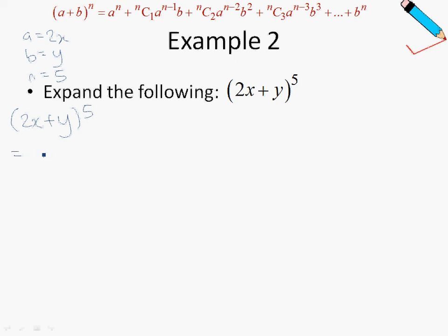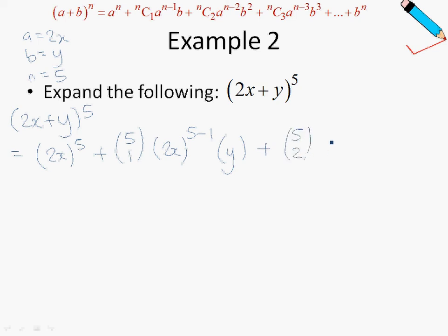The first term is a to the power of 5, which is 2x to the power of 5, followed by 5 choose 1, then 2x to the power of 5 minus 1 (so power of 4), and b is just y. Carrying on, 5 choose 2, then 2x to the power of 5 minus 2 (power of 3). If you're feeling lost, I'm just following the formula at the top of the screen. So b squared is just y squared. There are a few more terms to go, but I'm just showing the first 3 terms.